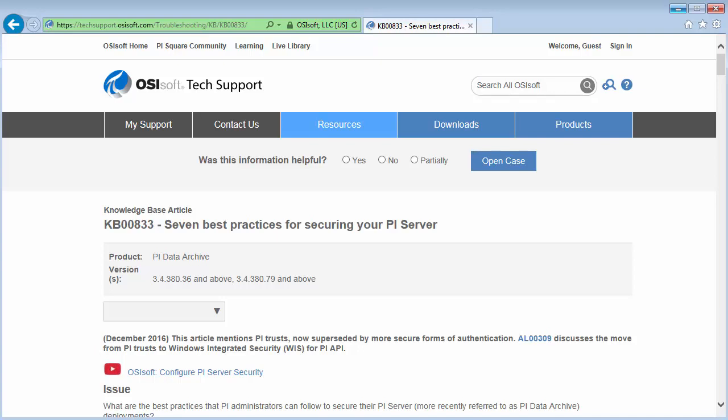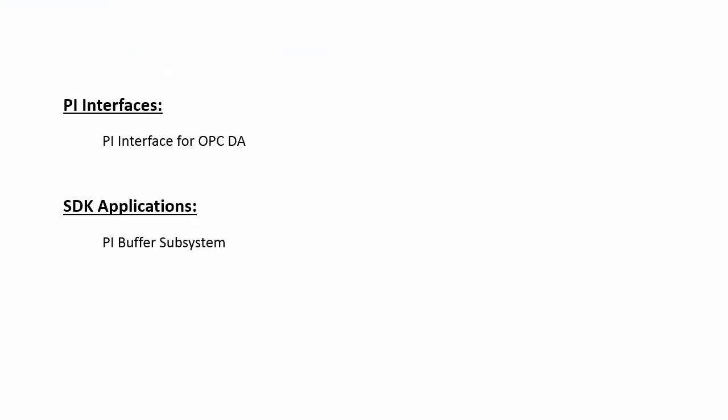Before we start, let's go over the plan. We'll create identities, which requires we are using PI Data Archive 3.4.380.36 and later. We'll create separate identities for PI Interfaces and PI Buffers. Separate identities are needed because interfaces and buffering don't need access to the same things, and we want to configure minimum permissions.